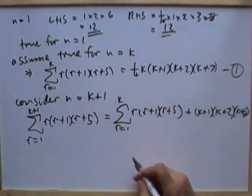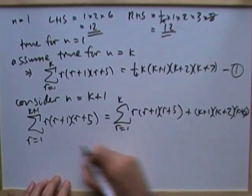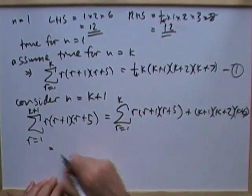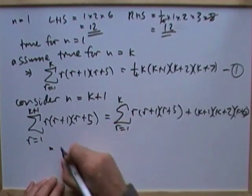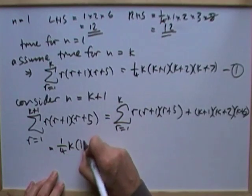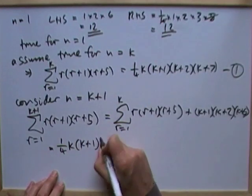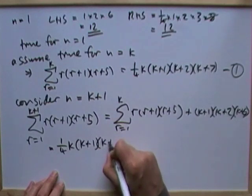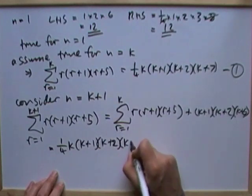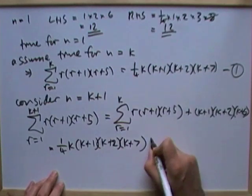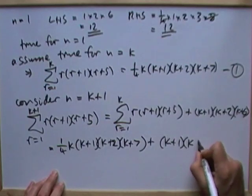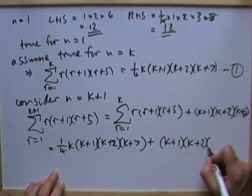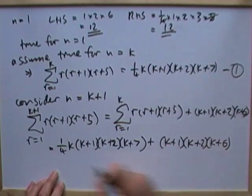Then, calling into play the inductive hypothesis, that part equals — by the hypothesis — one quarter k(k+1)(k+2)(k+7), plus the extra term for k+1: (k+1)(k+2)(k+6).